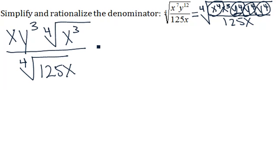Now to rationalize the denominator, we want to multiply this fraction by something so that we get rid of that fourth root in the denominator. In order to do so, we need to multiply by the fourth root of 5x cubed.